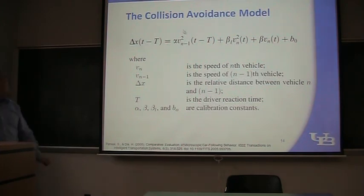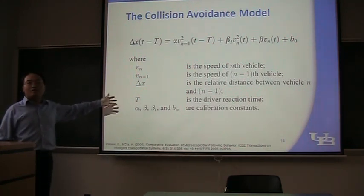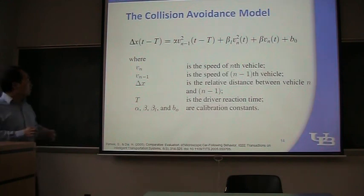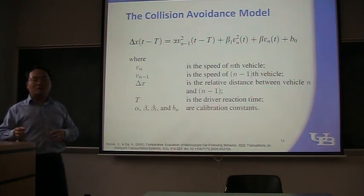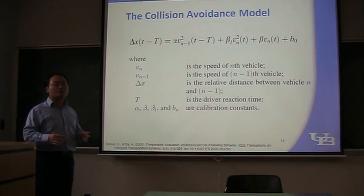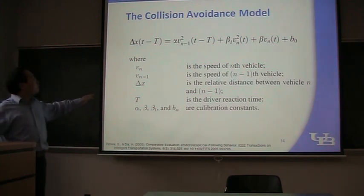Following this direction, they use Newton's laws, and they finally derive this kind of equation. In this equation, we have distance capital T seconds ago. We have the speed of the following vehicle ahead, and we have the current speed. And this model is also calibrated by real data. This is the original form, the basic form of collision avoidance model. But in 1981, a person, Gibbs, improved this model, which I'm going to talk about later. And the improved model is used in MITSIM. It's collision avoidance model. I'm going to talk about it. The basic idea is...